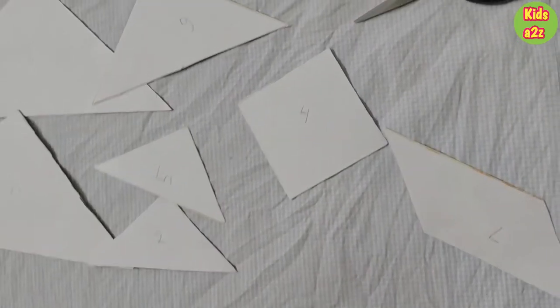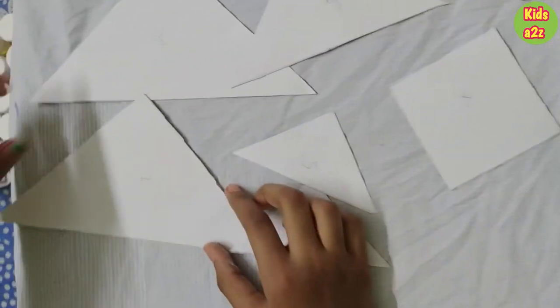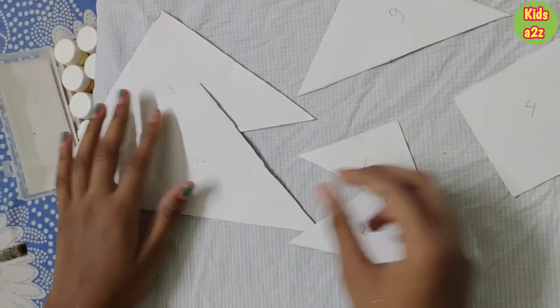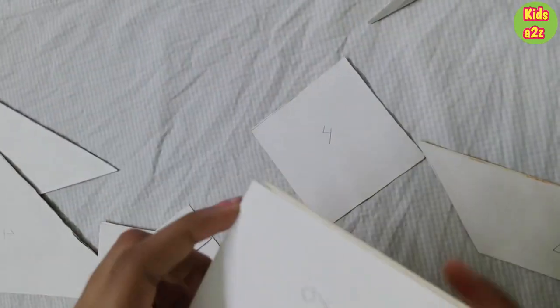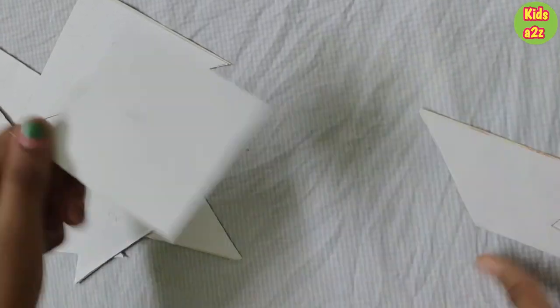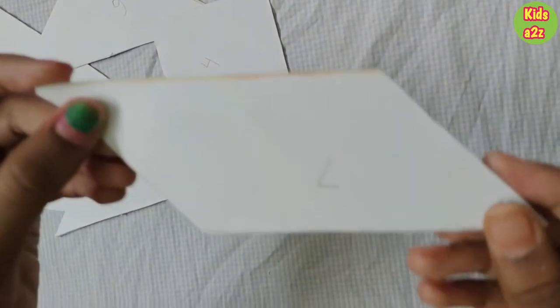So after cutting, we get 2 big triangles, 2 small triangles, 1 medium size triangle, a square and a parallelogram.